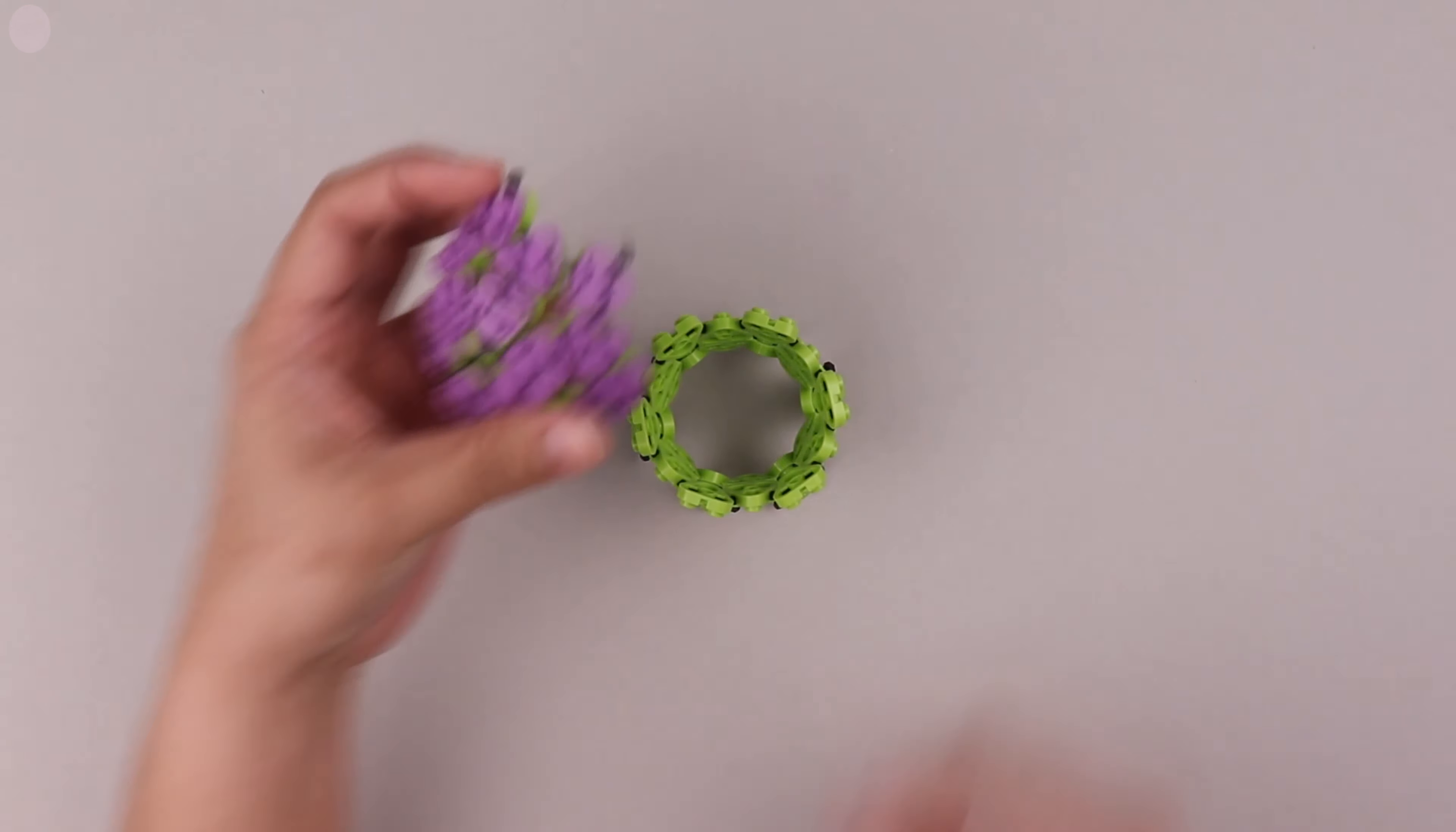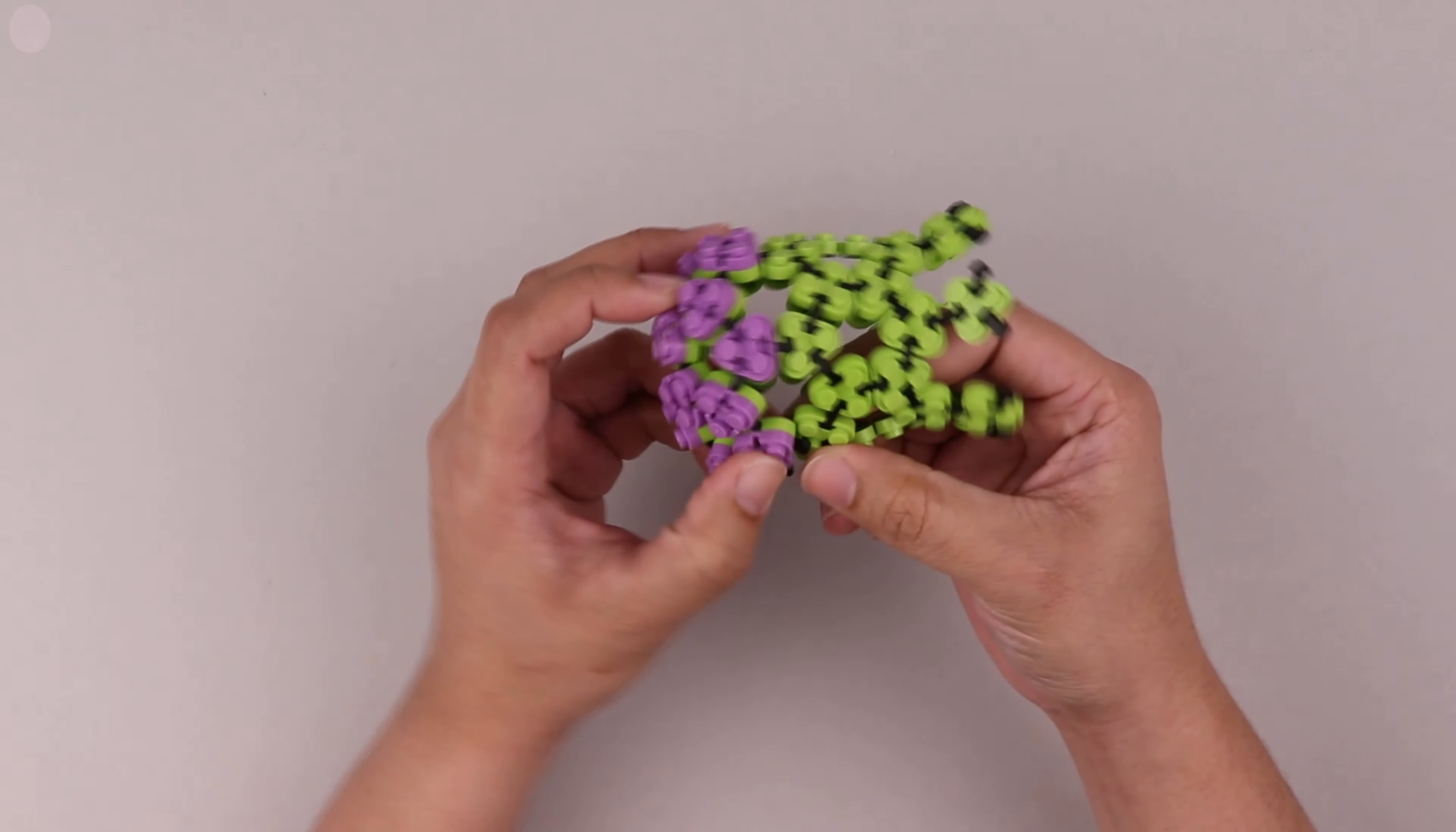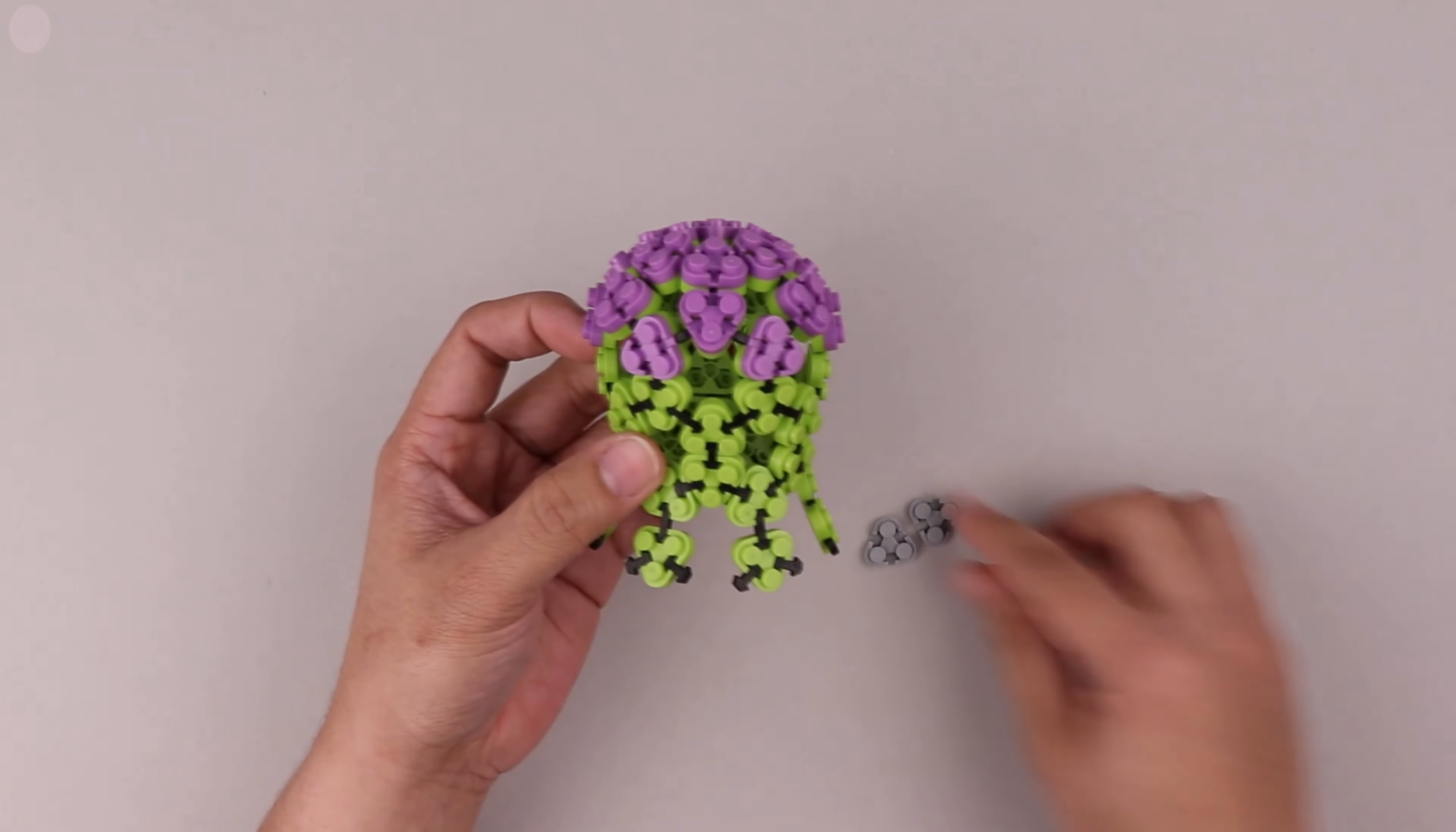Now we'll take the top of the head that we made earlier and connect it working our way around. Here's a really great example of a time to be locking off the tendons as you attach them. We didn't do that when we built today but it's certainly something that you want to do. It makes your flexo a lot easier to manage and build with in your hands. So every time you attach a tendon just lock it off with your next purple brick.